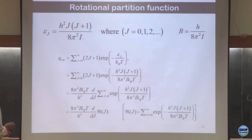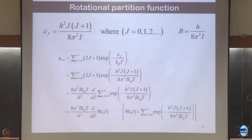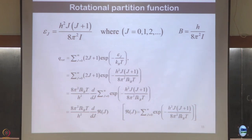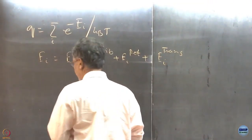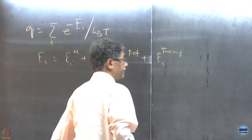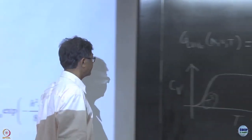One very important thing in the rigid rotator: J is the quantum number, like N was the quantum number in the harmonic oscillator. However, rotational levels come with a degeneracy. When there is a degeneracy, the partition function is written trivially — a show of hands reveals only a few students remember this.